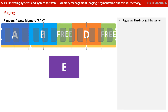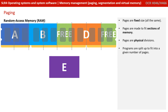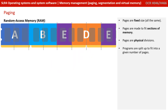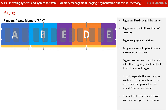With paging, the memory is divided into fixed sizes, all the same. Pages are made to fit sections of memory and are considered to be physical divisions. The programs are split up to fit into a given number of pages. Paging takes no account of how it splits the program, only that it splits it into these fixed size pages.